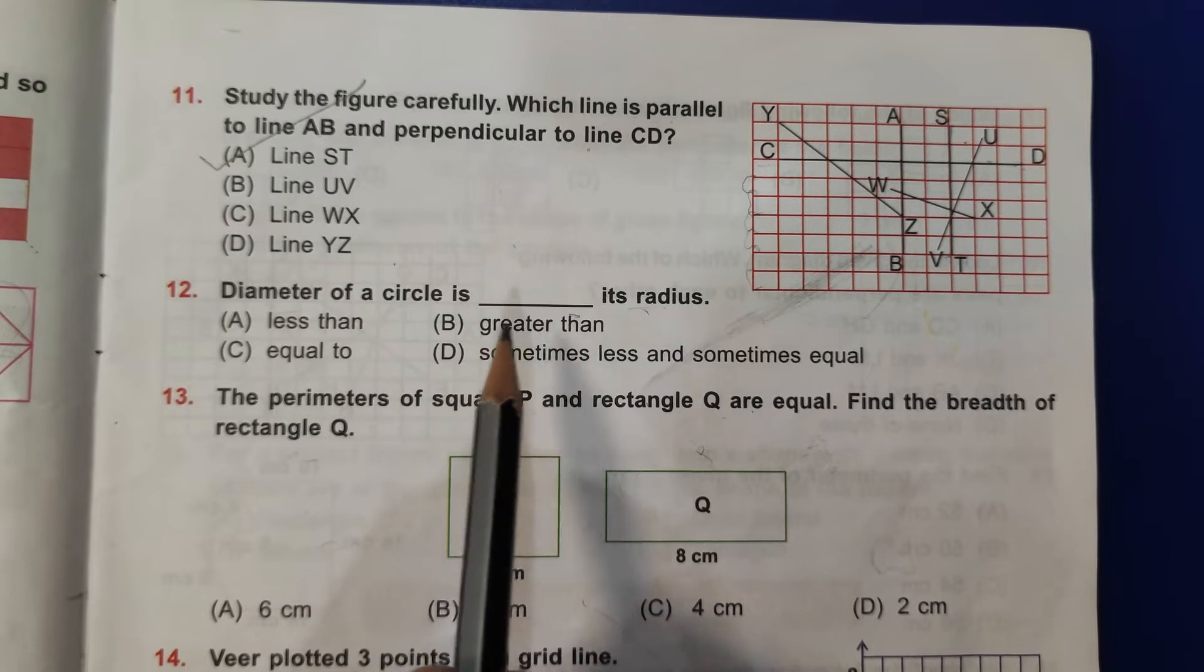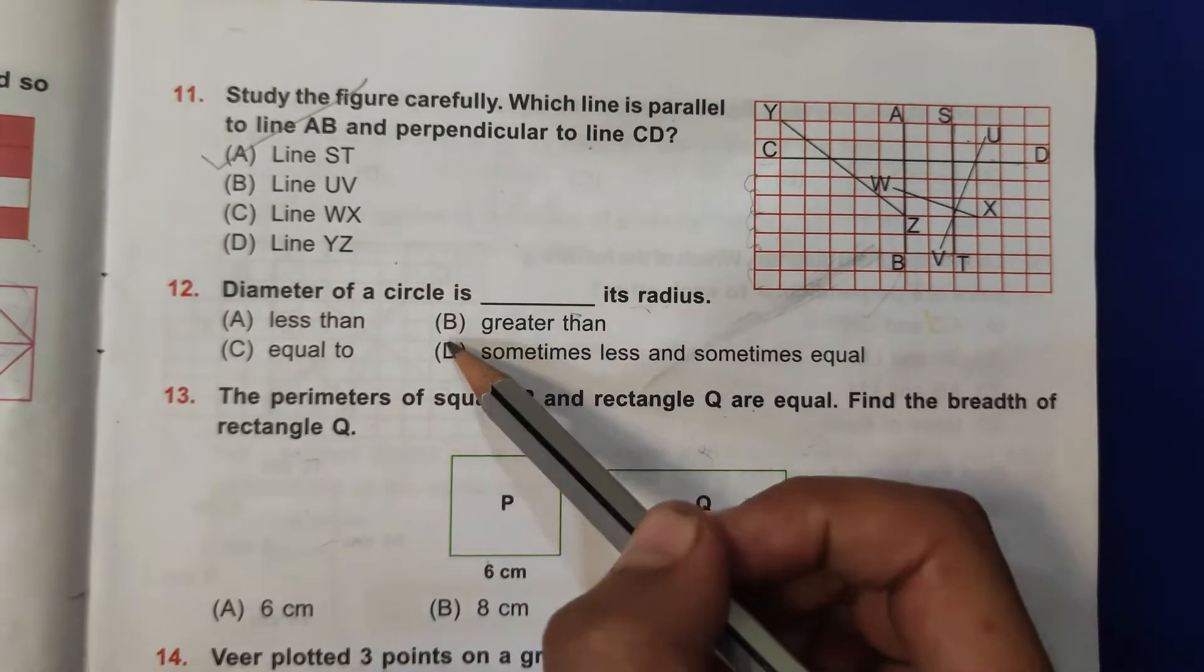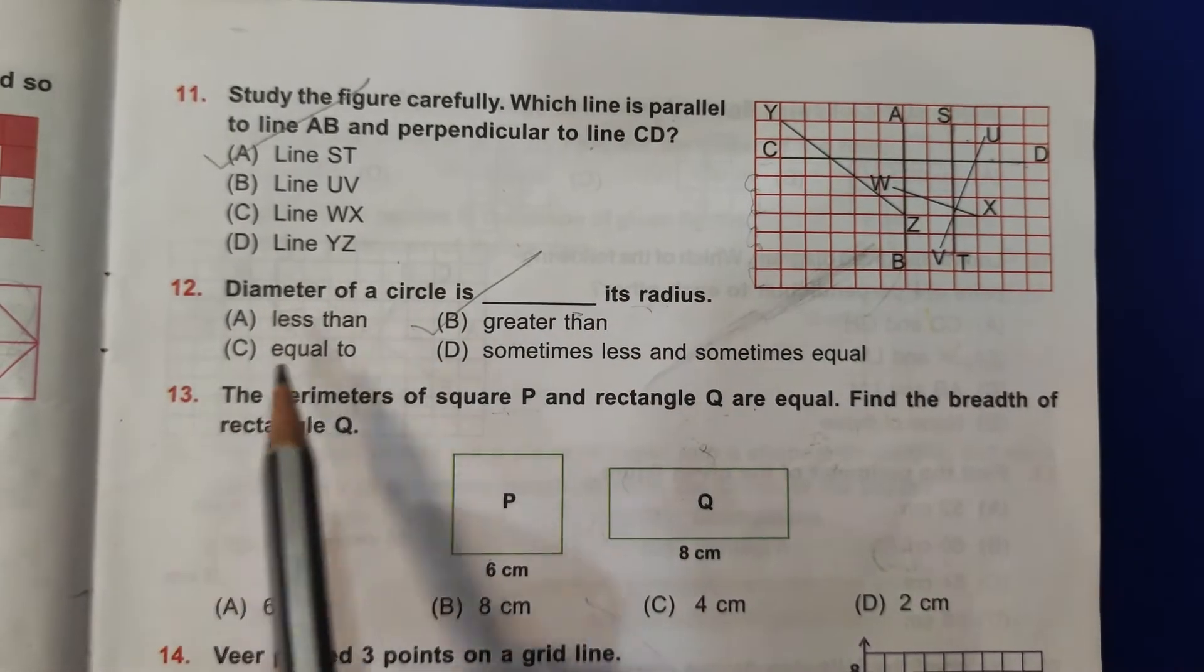Twelfth question: diameter of a circle is always greater than its radius. So B, greater than is the correct answer.